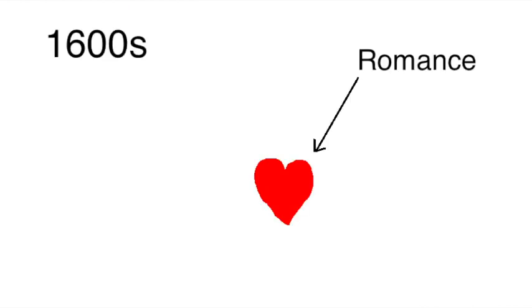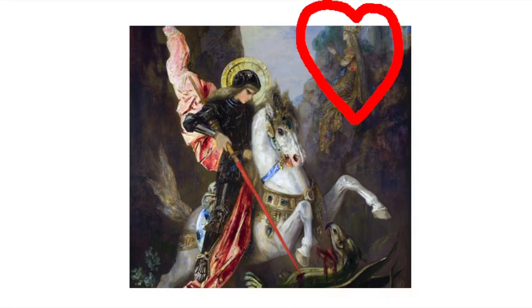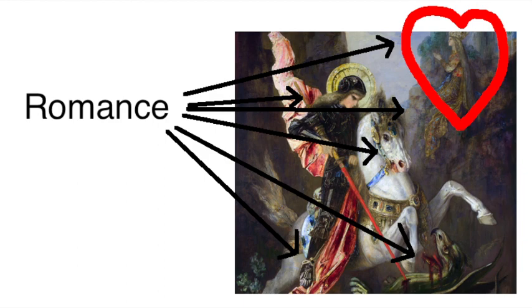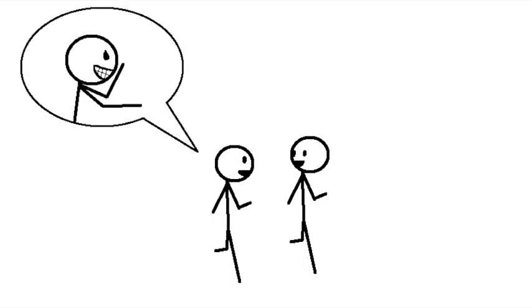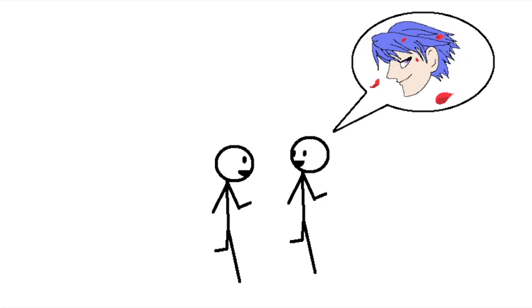By the 1600s people were starting to associate the word with love and with how love should ideally be, because love tended to feature so prominently in these stories, but its primary usage still referred to a literary genre that didn't necessarily have anything to do with love. It would kind of be like if today we talked about how our boyfriend can be so action movie, or how that date we went on was really anime.